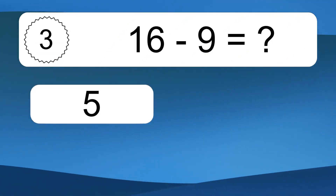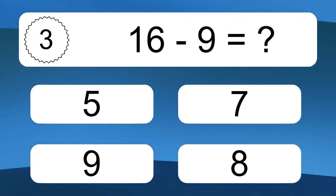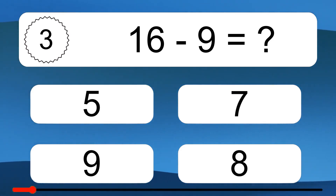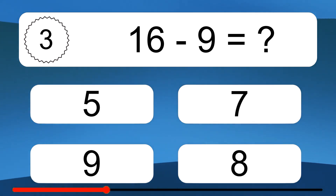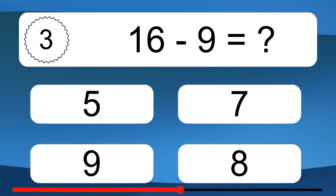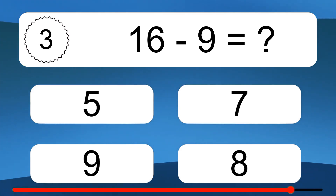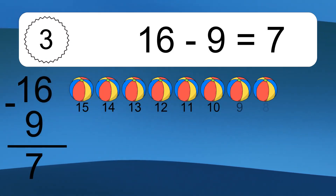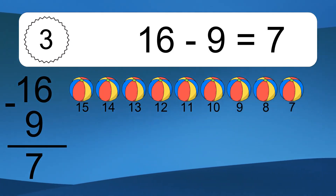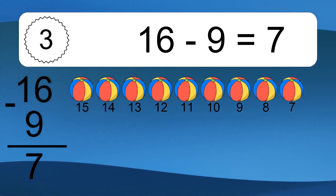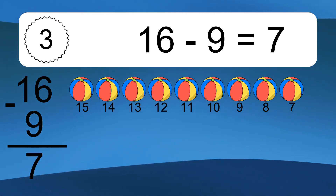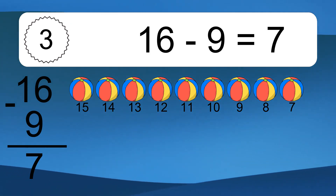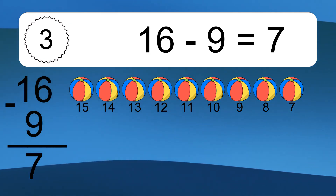16 minus 9 equals what? 16 minus 9 equals 7. Let's count it: 15, 14, 13, 12, 11, 10, 9, 8, 7.